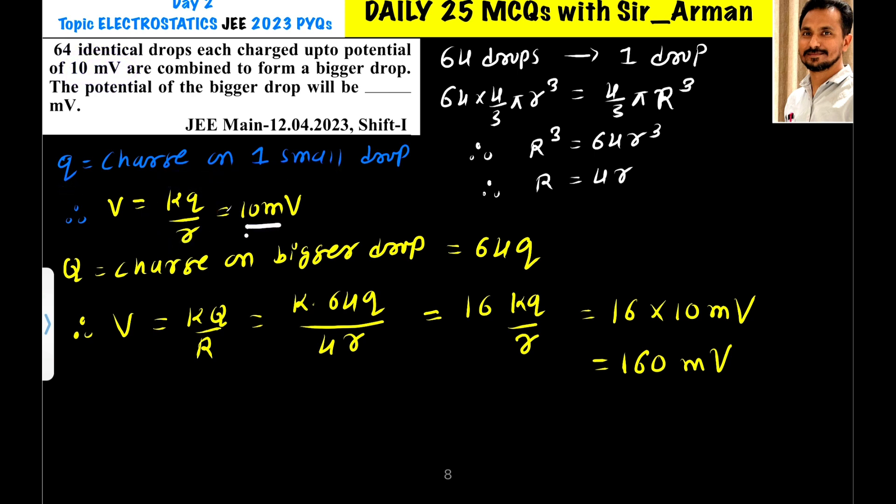Charge on the bigger drop will be 64 times q, because there are 64 drops. From charge conservation, if one drop has charge q, then 64 drops will combine to form a total charge of 64q. Now from the equation of potential, V equals k q by r.